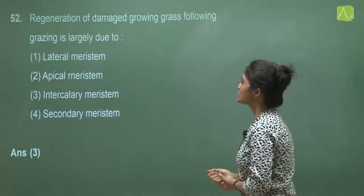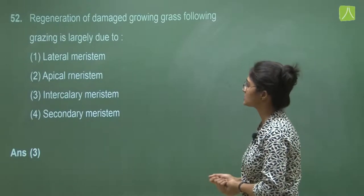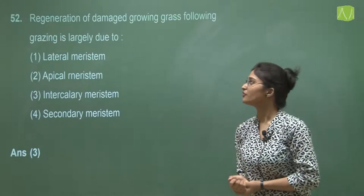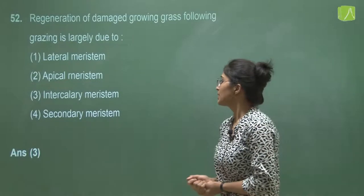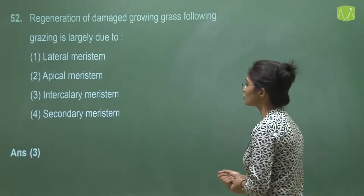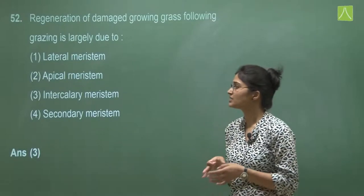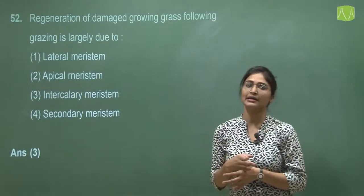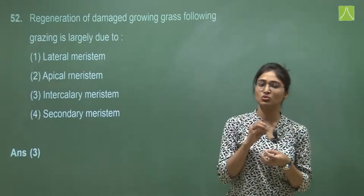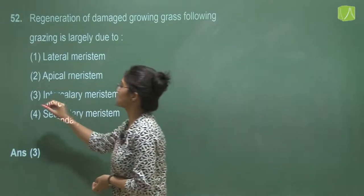Question 52 asks why regeneration of damaged growing grass following grazing is largely due to which meristem. The options are lateral meristem, apical meristem, intercalary meristem, and secondary meristem. Secondary and lateral meristems are not used for this type of growth. The answer is between apical and intercalary. Intercalary meristem is the basic meristem responsible for regeneration in grasses, so the answer is option three.